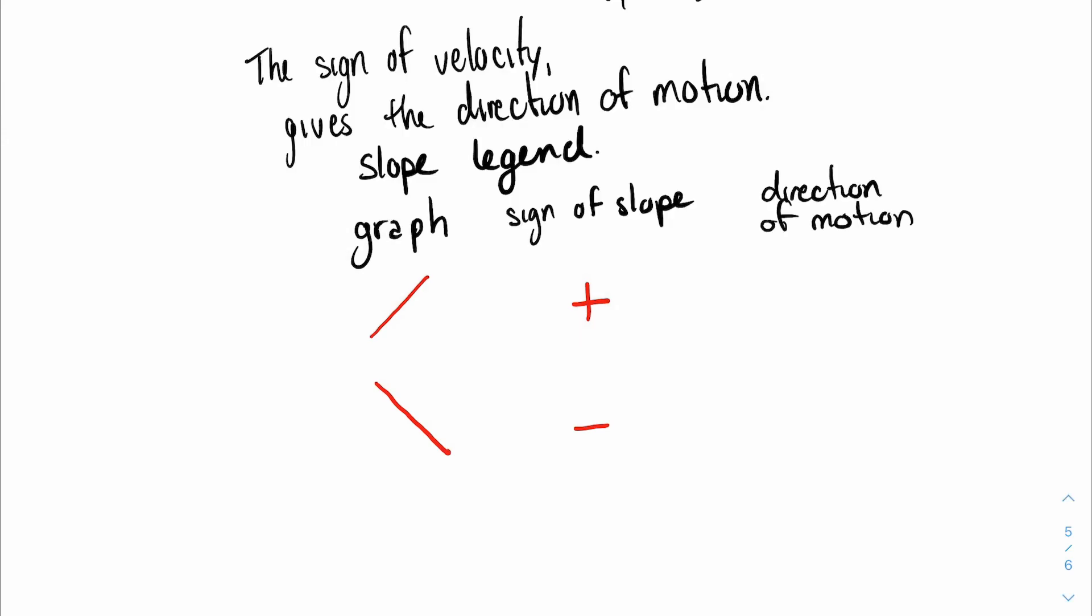And now we can connect it with the direction of motion. So if it's a positive slope, which means a positive velocity in this case, it moves to the right. And if it's negative it moves to the left. So this is very good to make a note of, and this is when we're talking about position-time graphs.